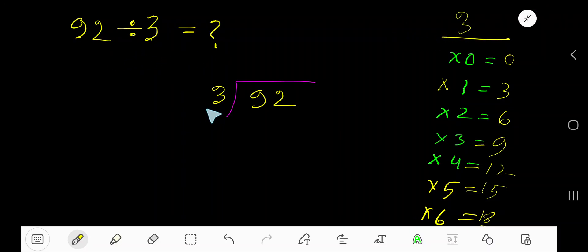92 divided by 3. Here 3 is a divisor. Soon we need multiplication table of 3.